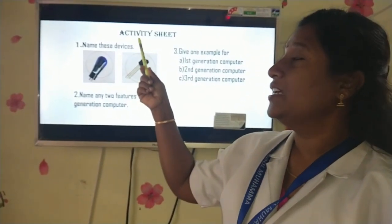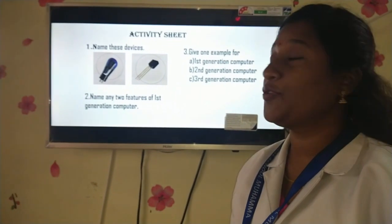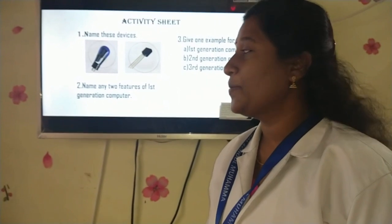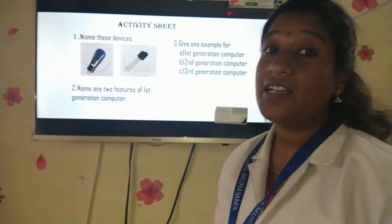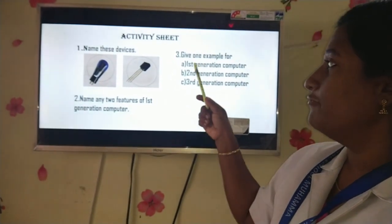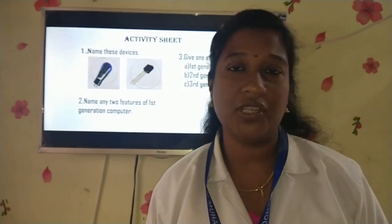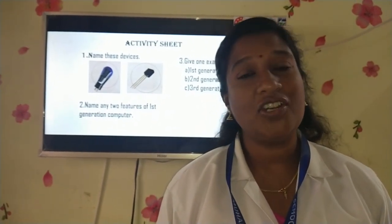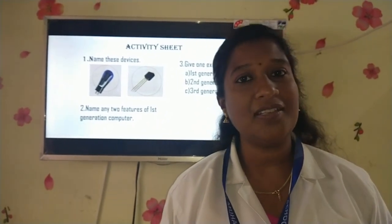My dear, look — this is your activity sheet. I have placed only three questions for you. First, identify these two devices. Second, name any two features of first generation computers. The last question: give one example each for first generation, second generation, and third generation computers. After watching the video, complete this activity sheet. See you, my dear children — we will meet with fourth and fifth generation computers. Bye bye!